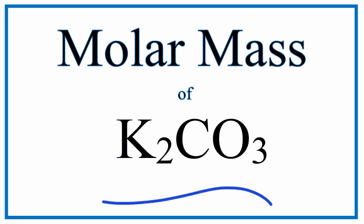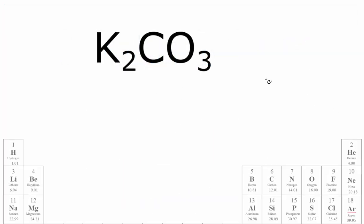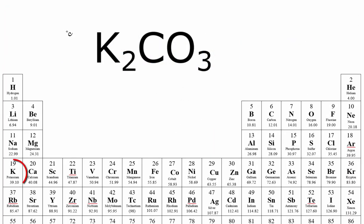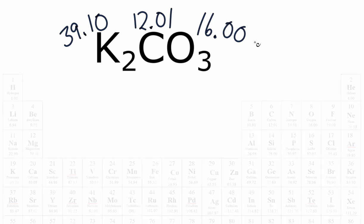To find the molar mass for K2CO3 potassium carbonate, let's first find the atomic masses for each of these elements. So for potassium that's 39.10, carbon is 12.01, and then oxygen is 16.00, and these units are grams per mole.